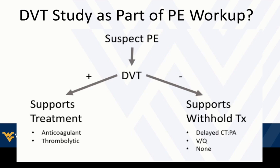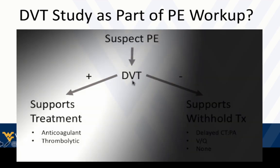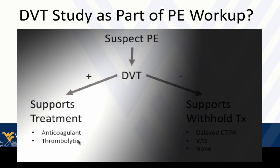Here's a simple algorithm: if we suspect PE but cannot confirm it definitively with pulmonary angiography or VQ scanning, we look for DVT. If we find it, that increases the likelihood of pulmonary embolism and supports going ahead and treating. If the patient is stable and we're going to treat with standard anticoagulants and we find a DVT, we can just treat — we don't necessarily need to separately diagnose the pulmonary embolism. If they're unstable, or you see right ventricular dilation on bedside echo, finding a source clot may support the difficult decision of administering systemic thrombolytics.